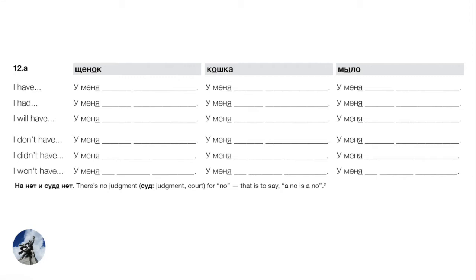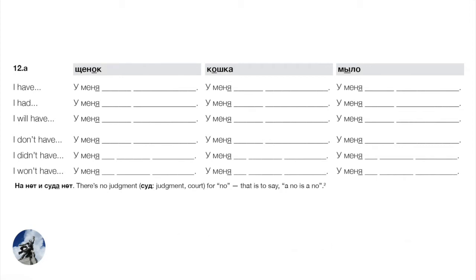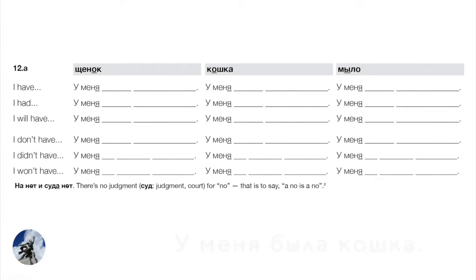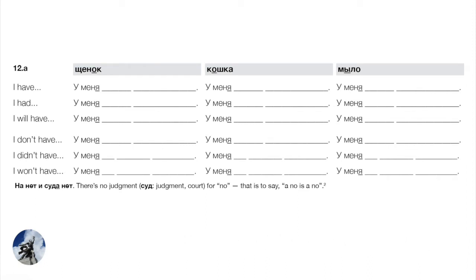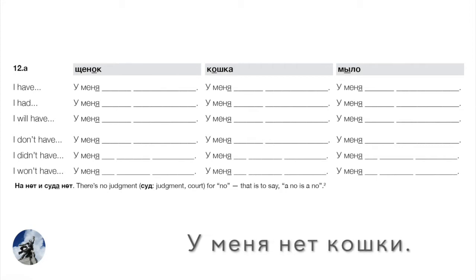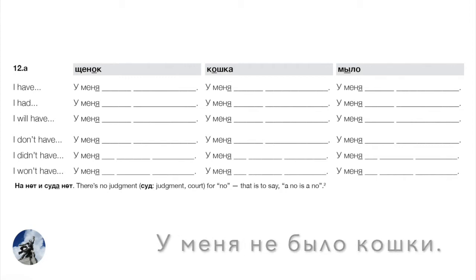Now a feminine example — кошка. Present: У меня есть кошка. Past: У меня была кошка. Future: У меня будет кошка. Switching to нет plus genitive: the genitive of кошка is кошки — note the seven-letter spelling rule means we write и not ы. У меня нет кошки. Past: У меня не было кошки. Future: У меня не будет кошки — the genitive portion кошки doesn't change, only the verb.